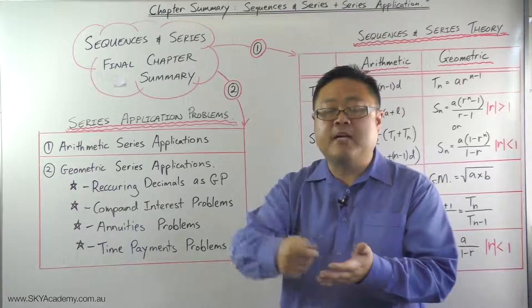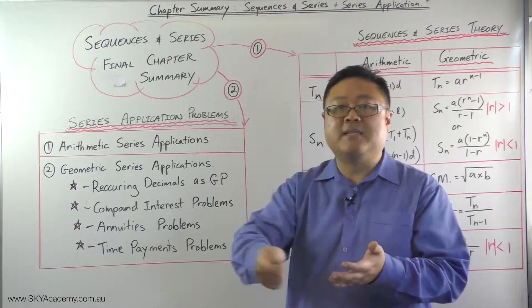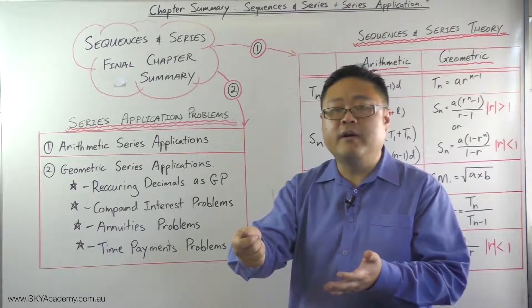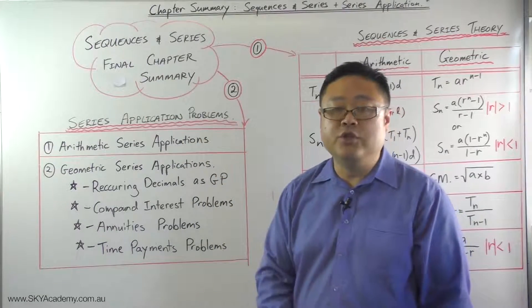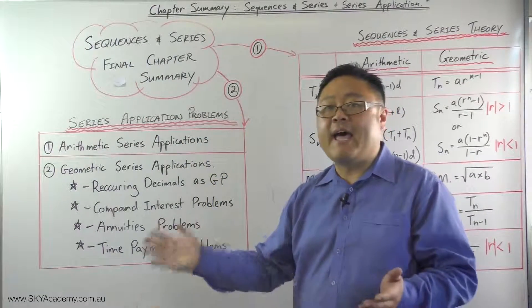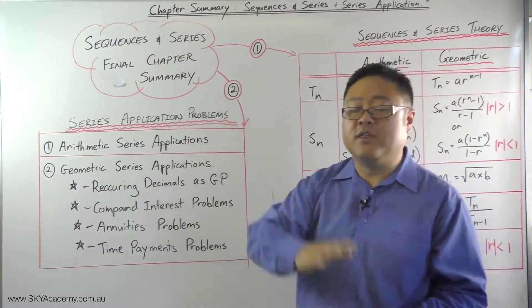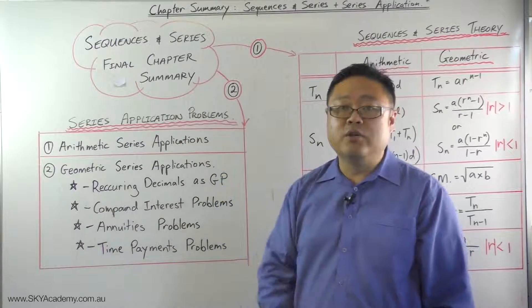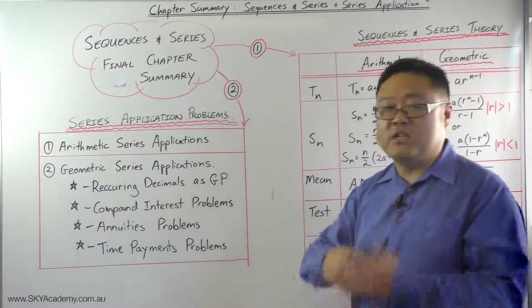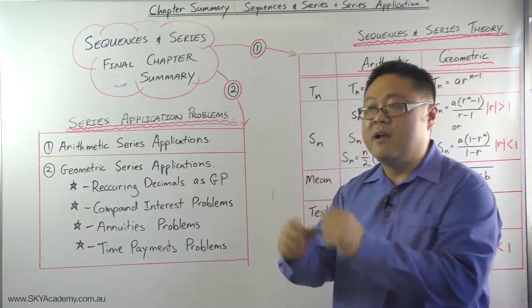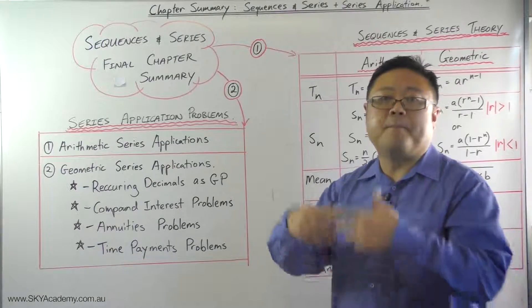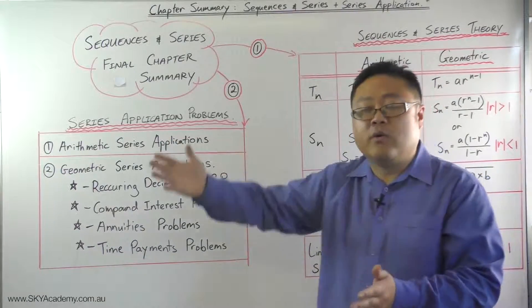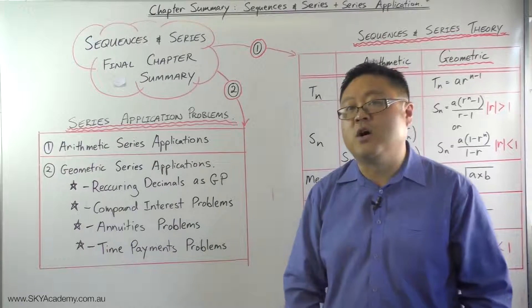Now with time payment problems, basically what we're doing is we're working out how much your monthly repayment has to be if we're paying down a reducible loan. We're paying down a loan that has an interest rate applied to it, so the interest rate is being applied to the reducing balance as you're making these time payments, and you've got to work out how much that repayment has to be in order to pay it off by a certain period of time.